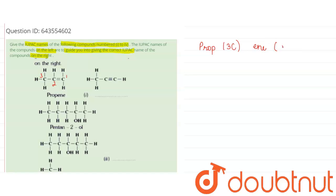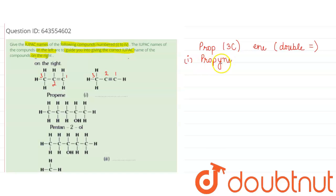The double bond is on the first position. Now for the given compound, we also have three carbons, so our answer begins with 'prop'. But instead of a double bond at first position, we have a triple bond. For a triple bond we use 'yne', so the name becomes propyne — 'prop' for three carbons and 'yne' for the triple bond at first position.